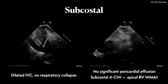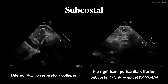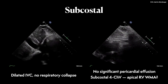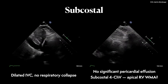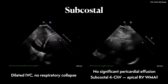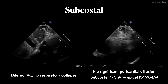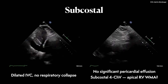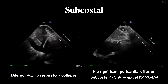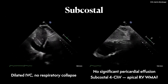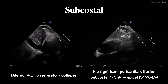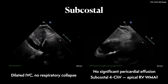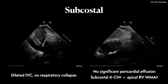Moving on to the subcostal views, we can also evaluate the IVC. The IVC is dilated and there is no respiratory collapse at all. Furthermore, in the subcostal four chamber view we do not see significant pericardial effusion. We do see probably a certain degree of free fluid around the right ventricle, but it is definitely not hemodynamically relevant.